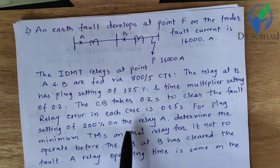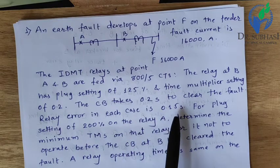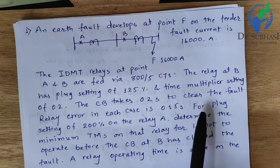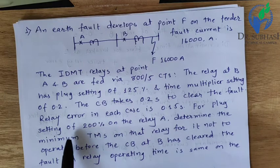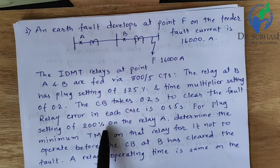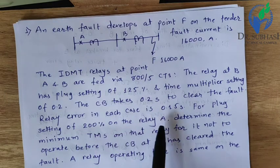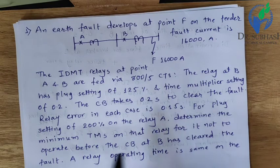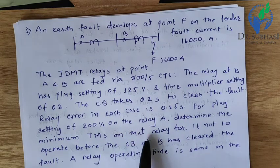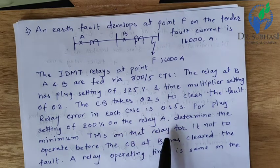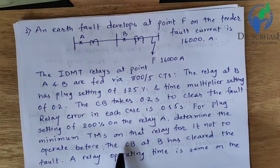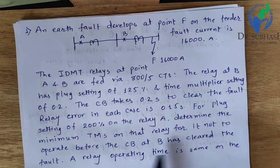Relay error in each case is 0.15 seconds. For Plug Setting of 200% on relay A, we have to determine the minimum Time Multiplier Setting on the relay for it not to operate before the CB at B has cleared the fault.